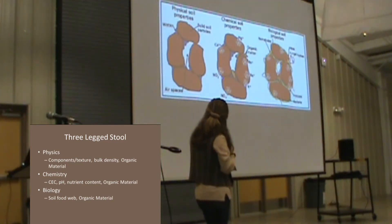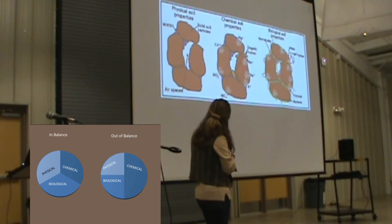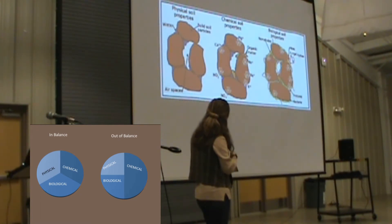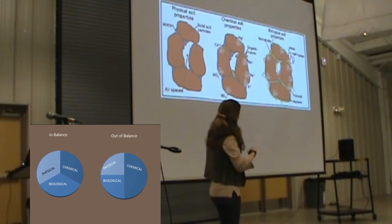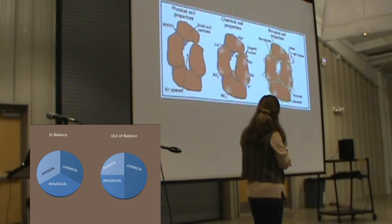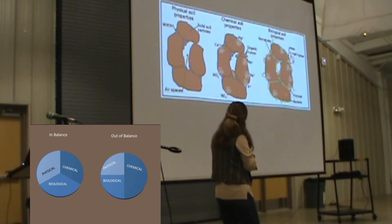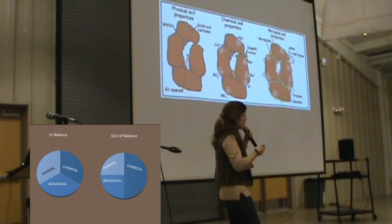Looking at those three properties again: on the physical side, we have how it holds water, how much air is available in the pore spaces, and what the actual soil particles look like. On the chemical side, we're talking about the actual nutrients and elements available. On the biological side, we've got lots of fungi holding things together, nematodes both beneficial and otherwise, some microscopic organisms, bacteria, insects, and mold.